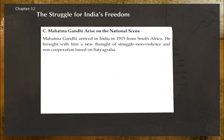Congress and the Muslim League signed the Lucknow Pact and decided to present common political demands before the government. Mahatma Gandhi arrived in India in 1915 from South Africa, bringing with him a new philosophy of struggle — non-violence and non-cooperation based on Satyagraha.